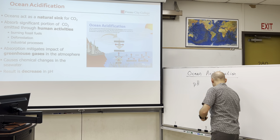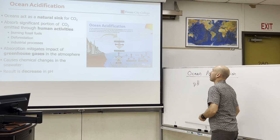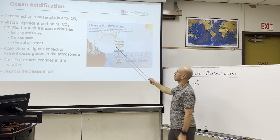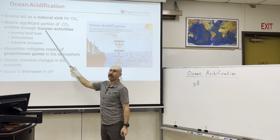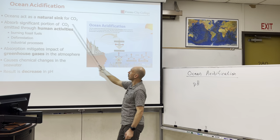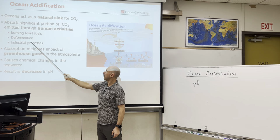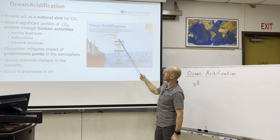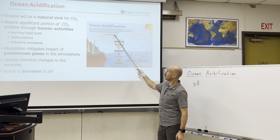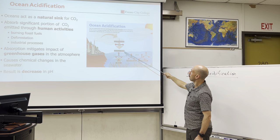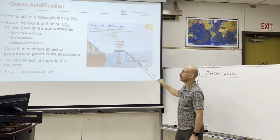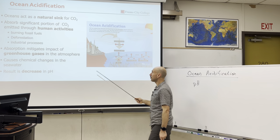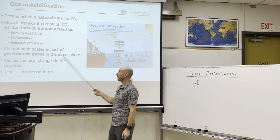The oceans are a natural sink, meaning carbon dioxide enters the oceans. Carbon dioxide is added to the atmosphere through fossil fuels, deforestation, and industrial processes, thereby putting more greenhouse gases into the atmosphere. More greenhouse gases in the atmosphere mean more carbon in the ocean. When you add something, it's going to change that which it was originally added to, so there are chemical changes in the ocean.